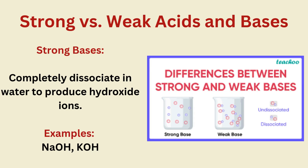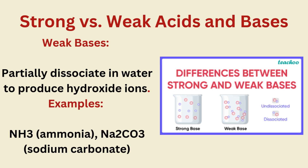Strong bases completely dissociate in water to produce hydroxide ions. Examples: NaOH, KOH. Weak bases partially dissociate in water to produce hydroxide ions. Examples: NH3, ammonia; Na2CO3, sodium carbonate.